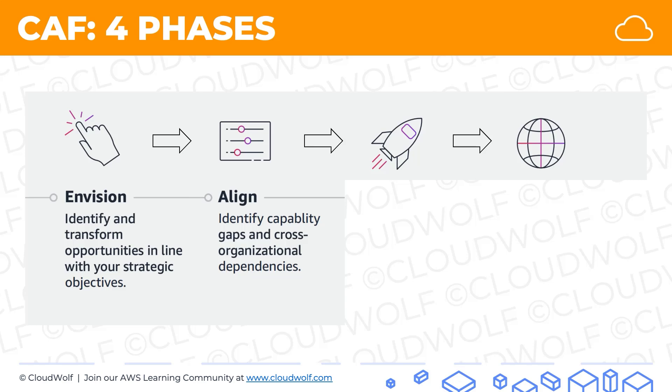Then you align: identify capability gaps and cross-organizational dependencies. After you have a vision, you look at what you already have — where are the gaps? If you have a vision and what you already have matches it exactly, you don't need to do anything, but you need to identify what exists, what works, and where the gaps are.